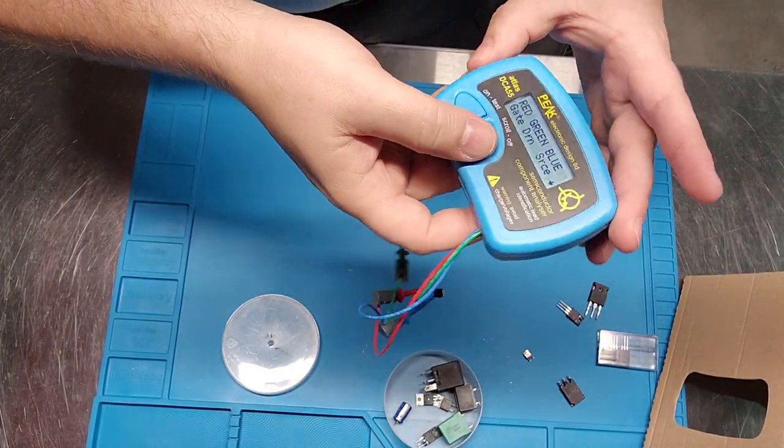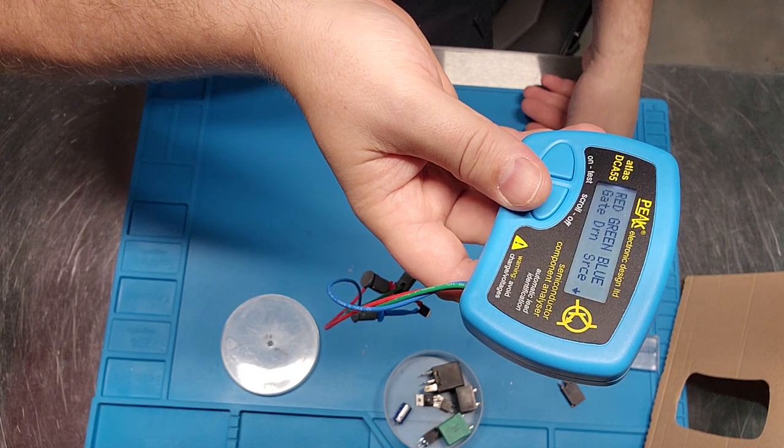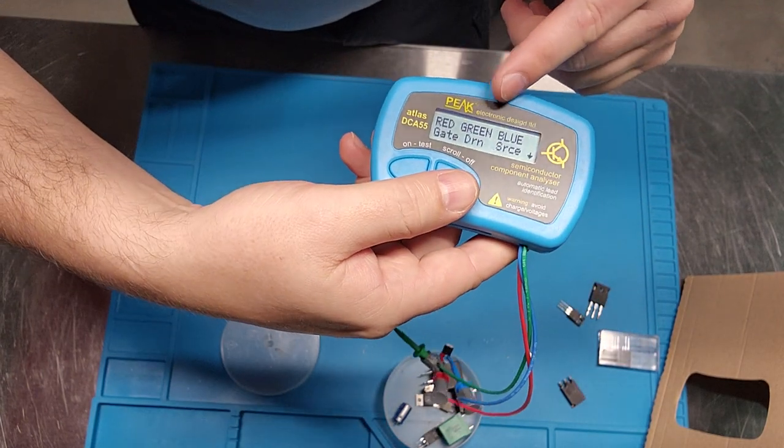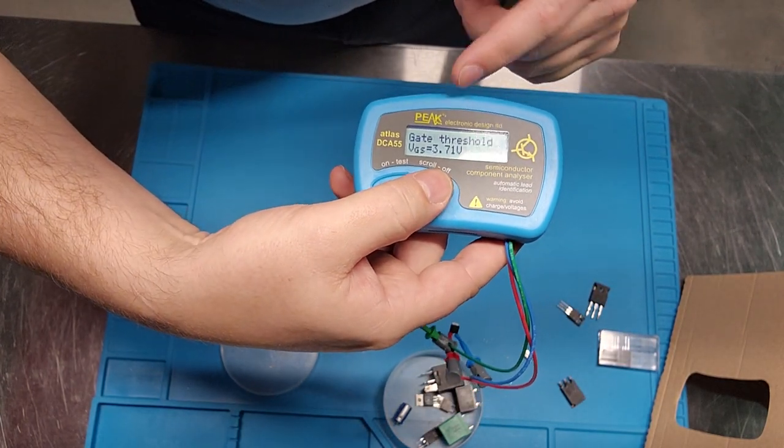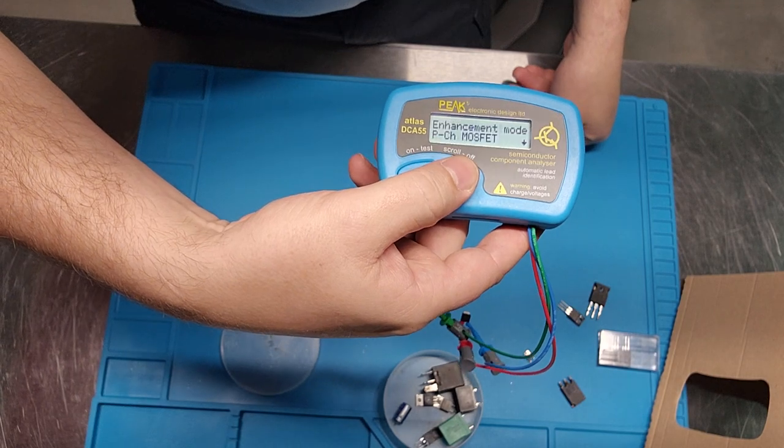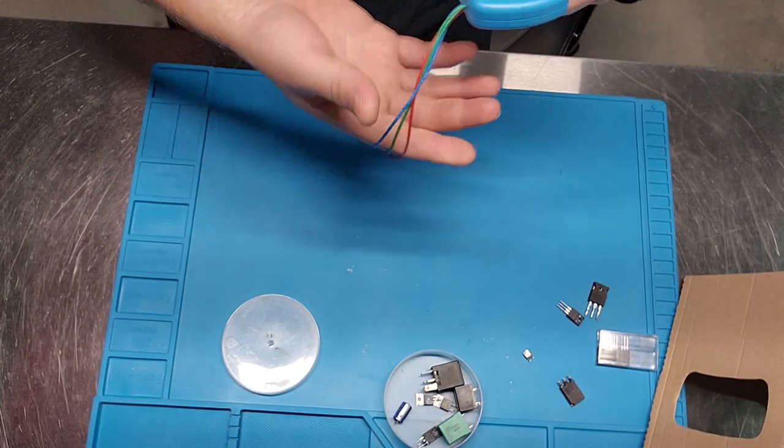And then it says which is the gate, the drain, and the source. You can see its threshold. Its current. How cool is that?